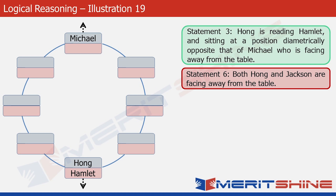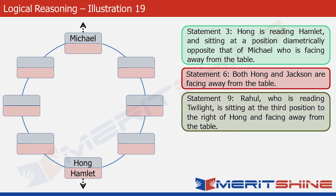The next statement we use is statement nine. It says that Rahul is sitting at the third position to the right of Hong. This is Hong's position in the structure, so this would be Rahul's position. Since Rahul is reading Twilight, let's write Twilight here. And since Rahul is facing away from the table, let's put an outward arrow at his position.